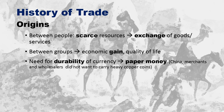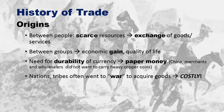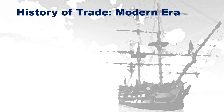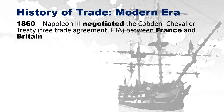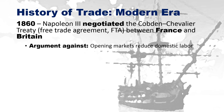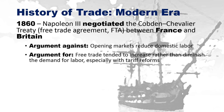People went to war to get goods but realized it was incredibly costly, and so began thinking of other ways to acquire goods. In 1860, Napoleon the Third negotiated the Cobden-Chevalier Treaty, a free trade agreement between France and Britain. One argument against it was that opening markets would reduce domestic labor, while an argument for it was that it would increase rather than diminish demand for labor by opening markets and addressing tariff reforms — tariffs being taxes on imports.